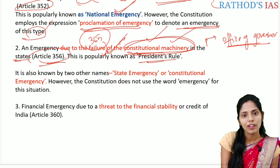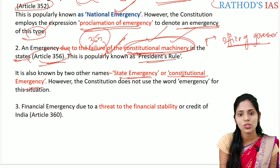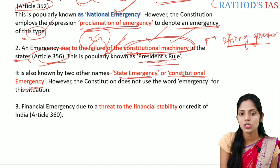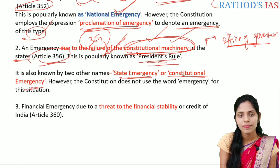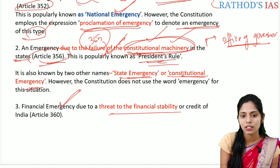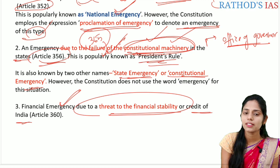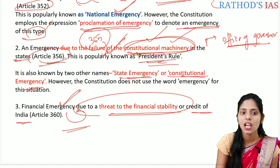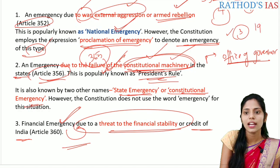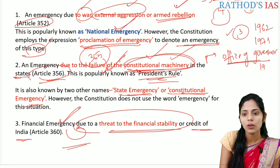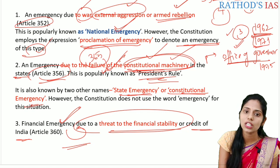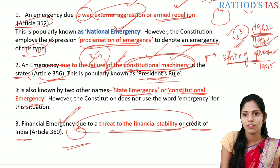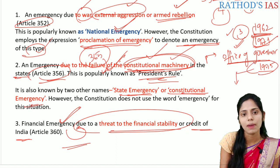Article 356 is well known by other names as well — state emergency or constitutional emergency — but the constitution uses the term 'president's rule.' Article 360 talks about financial emergency due to a threat to the financial stability or credit of India, upon which the president can proclaim a financial emergency. Till now, financial emergency has not been imposed even once. The national emergency has been imposed three times: in 1962 (Indo-China war), 1971 (Indo-Pakistan war) — both external emergencies — and 1975, which was an internal emergency introduced by the Indira Gandhi government.